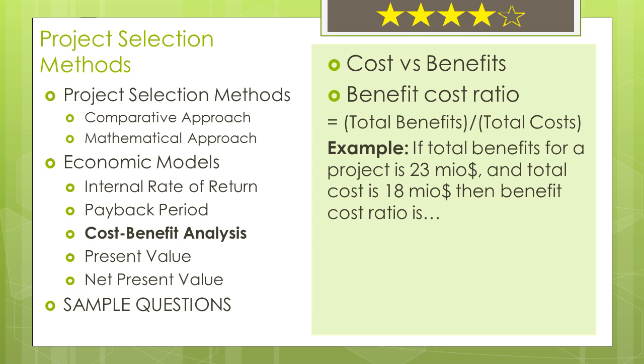Here is an example. If total benefits for a project is $23,000,000 and total cost is $18,000,000, then benefit-cost ratio is 1.28. We just divide 23 by 18 in order to get the answer.